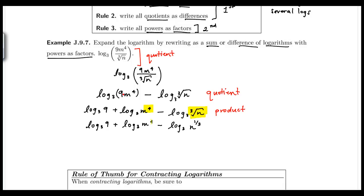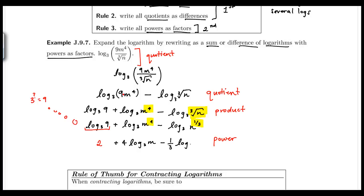Now I can see the power rule applies to two terms. In the last step, I'll use power rule. Log base three of 9 can be simplified — three to what power gives nine? That's two — so we simplify that to 2. Then put the 4 in front of the log as a factor, and put the one third in front of the log as a factor. All powers are now written as factors.